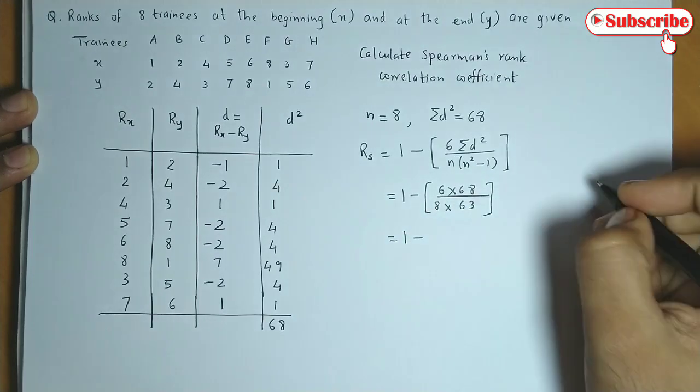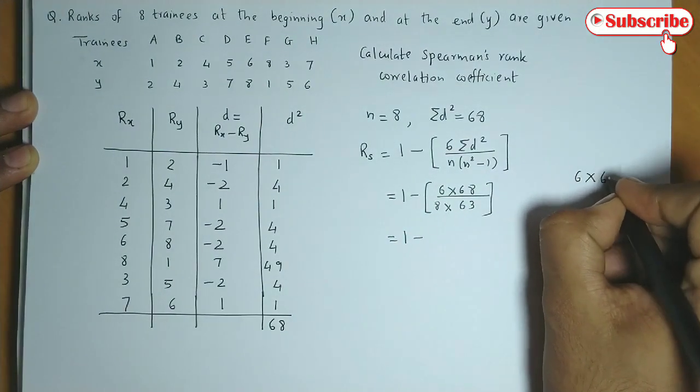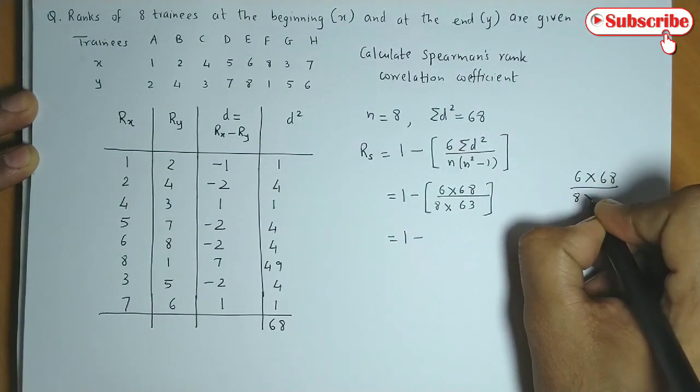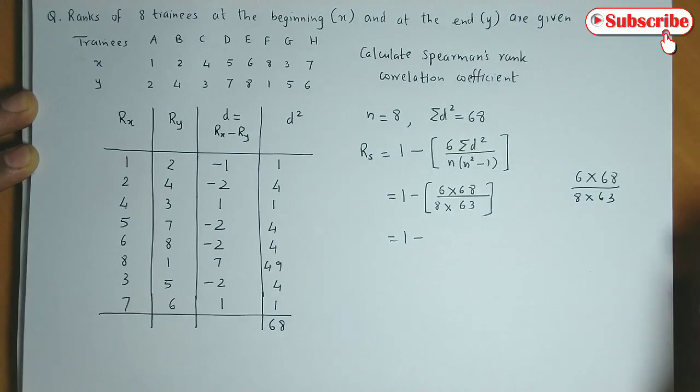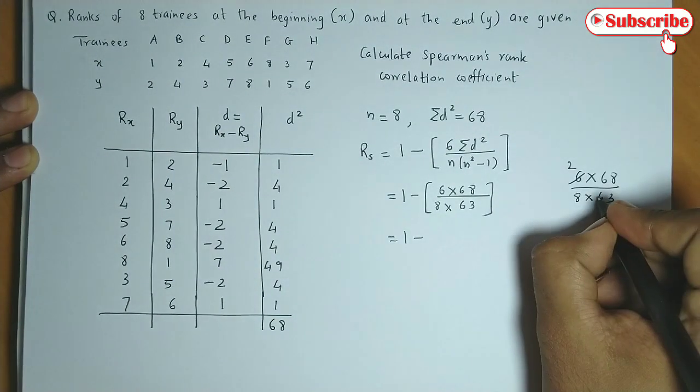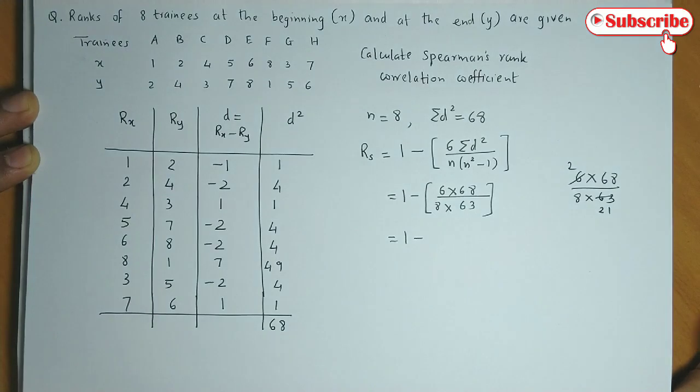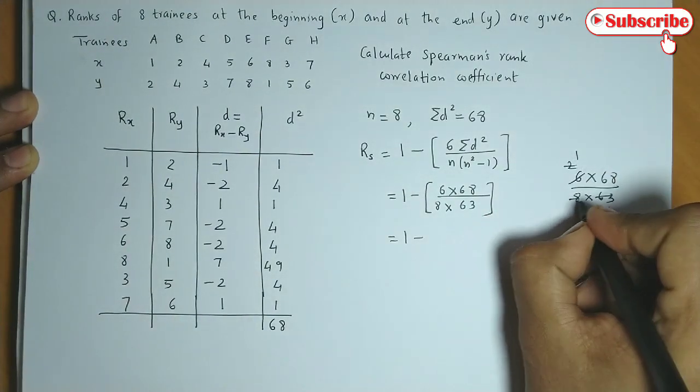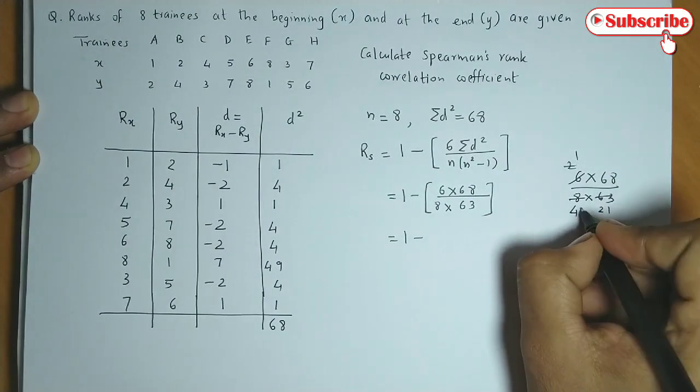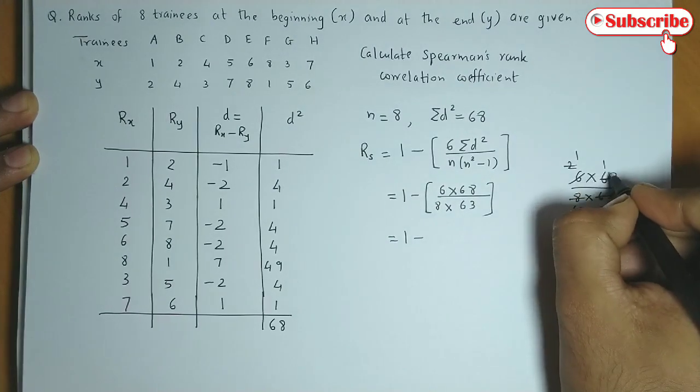Let us simplify this further. 6 into 68, 8 into 63. 3, 2s are 3, 21s are 2, 1s are 2, 4s are 4, 1s are 4, 7s are.